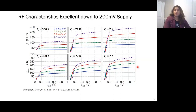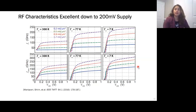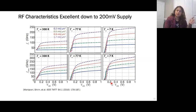We also characterized the RF characteristics and measured the scattering parameters of the device at three different temperatures over a wide range of current densities. We typically design LNAs for less than 1 mA/µm², below the red line. The fT of these devices stays almost constant over a very wide range of supply voltages, and starts collapsing for less than 100 mV supply voltage.